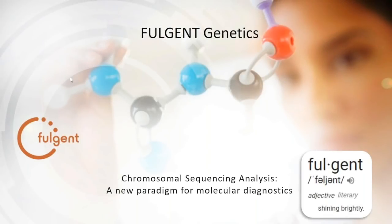Hello, this is Megan Gillespie, genetic counselor at Fulgent Genetics here in Los Angeles. We're just about to get started on sharing our newest test, our chromosome sequencing analysis, which combines genome-wide copy number analysis along with whole exome sequencing. We think this test has the potential to streamline the testing process for your practice and maximize the chance to get a diagnosis for your patients.